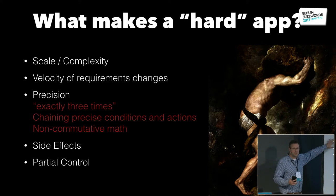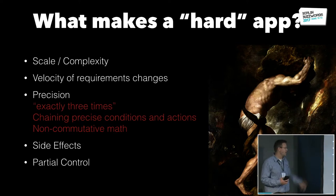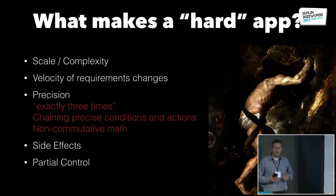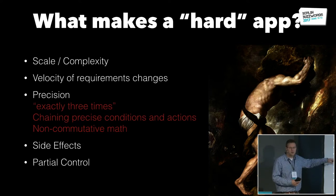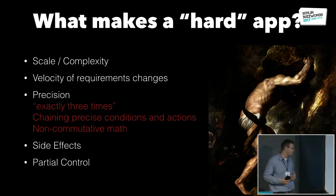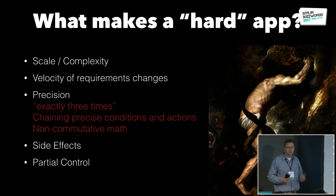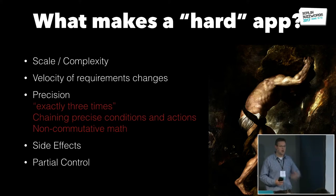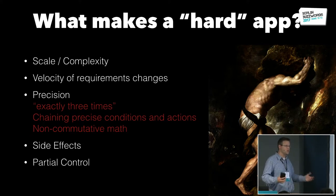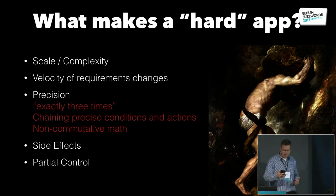What makes a hard app? Obviously scale and complexity. Velocity of requirements changes is something that can make an app hard. For an operational app specifically: precision — if I want to do something exactly three times, that's much, much harder than about three times. Chaining precise conditions and actions makes things hard. Non-commutativity of math — if ops come in different orders and you get a different result — can be tricky. Side effects, as I mentioned. And partial control, where you don't control all of your app — maybe two different groups are working on it, or it's an OEM and their customer — makes apps a lot harder.